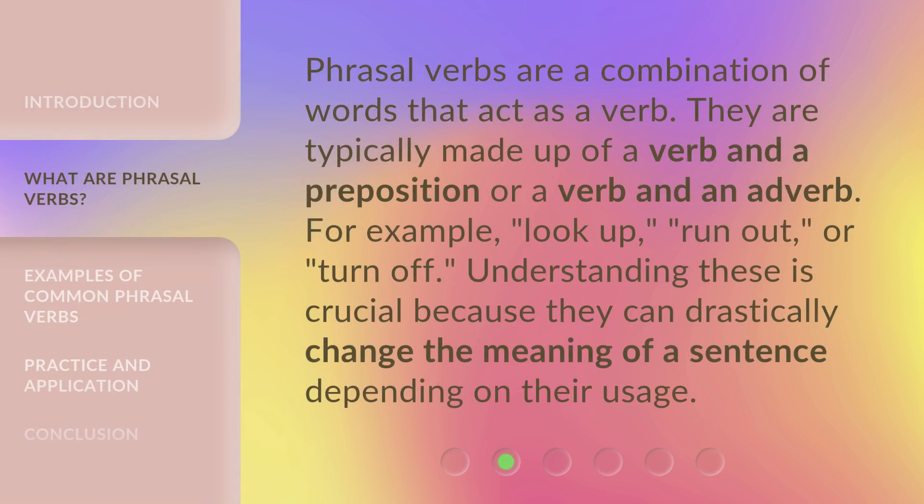Phrasal verbs are a combination of words that act as a verb. They are typically made up of a verb and a preposition, or a verb and an adverb. For example: look up, run out, or turn off. Understanding these is crucial because they can drastically change the meaning of a sentence depending on their usage.